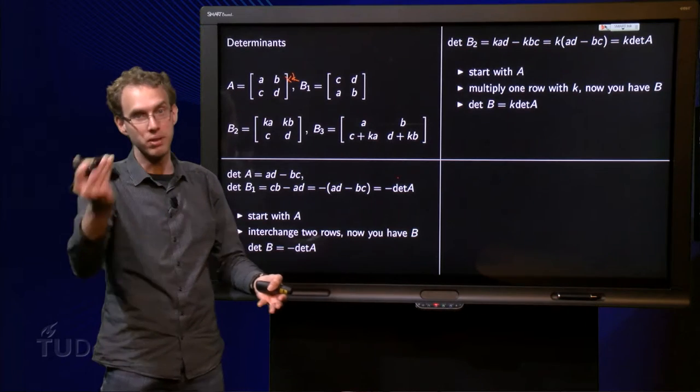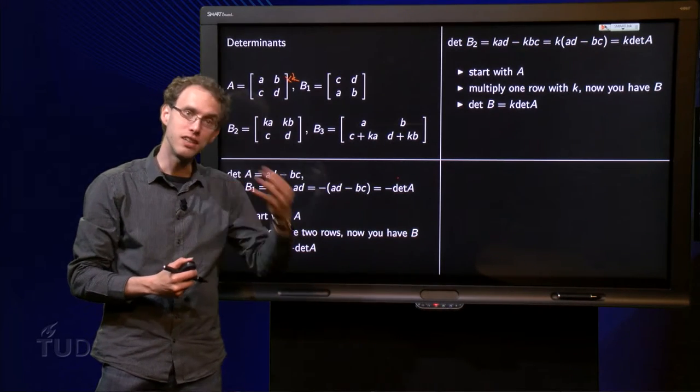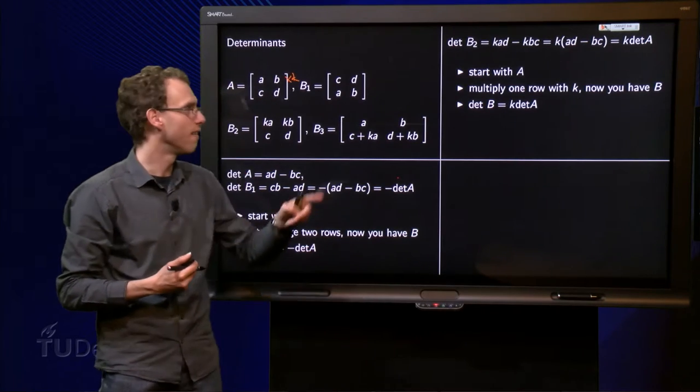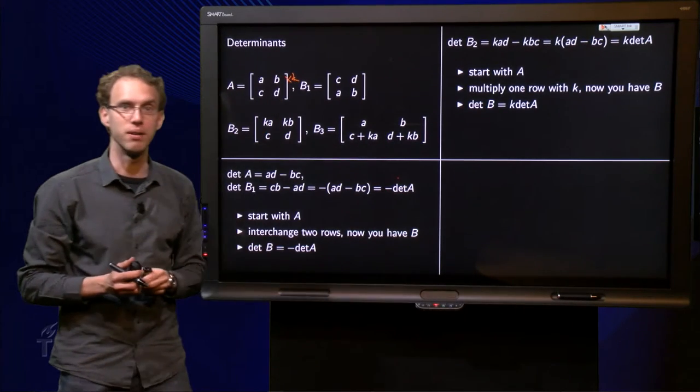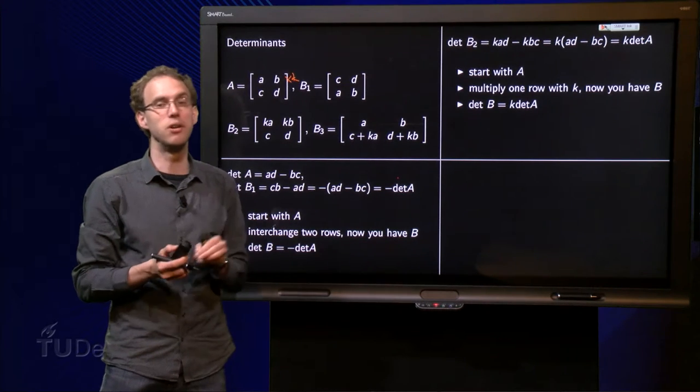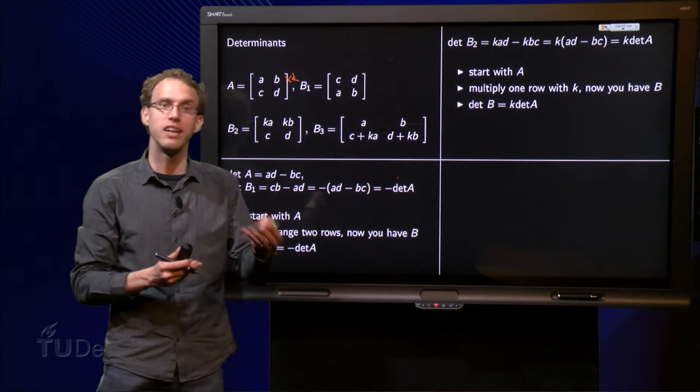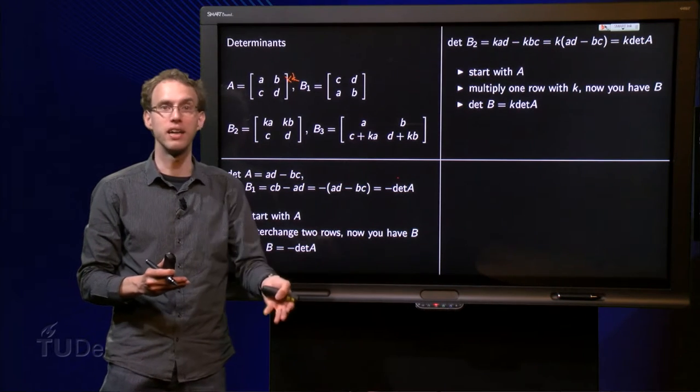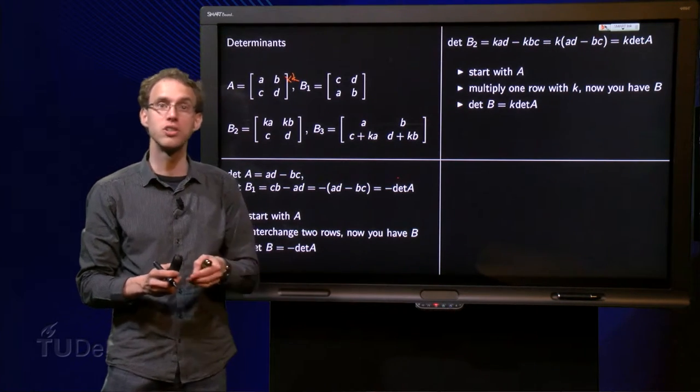So you start with A, you get B. You get the determinant of B by multiplying the determinant of A by K. So careful over here. Well, those two are the two, say, easy row operations. And already there something is happening: interchanging rows cost you a sign, multiplying a row cost you a constant times the determinant.